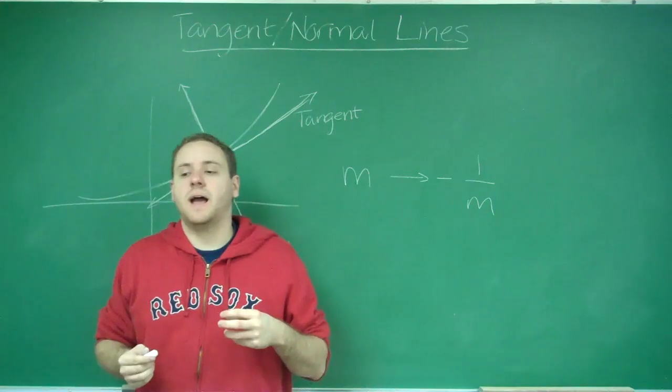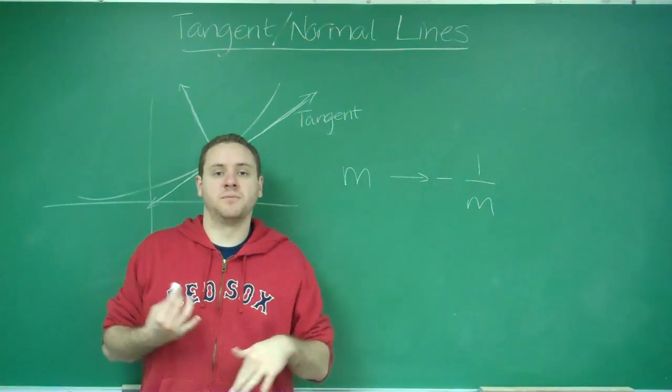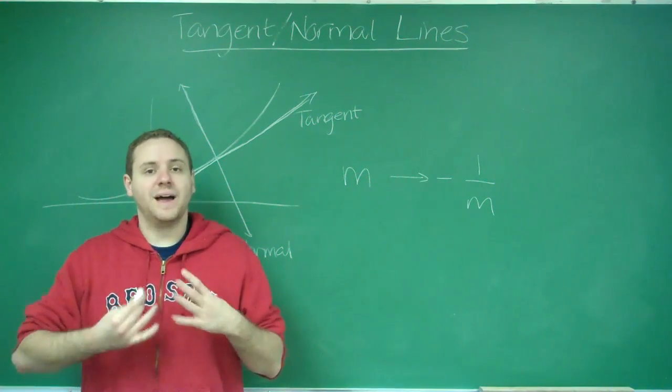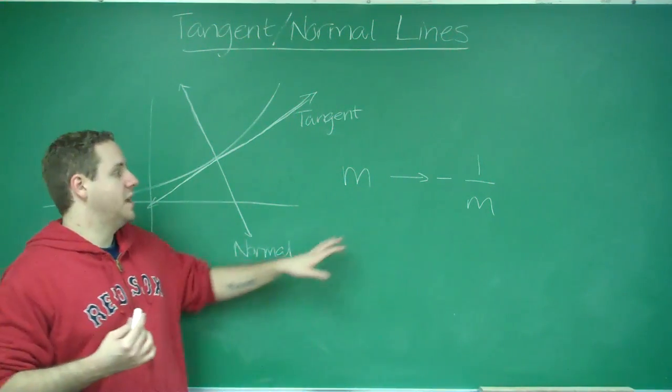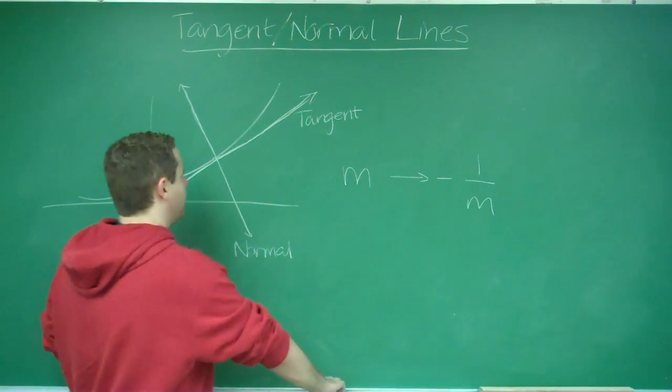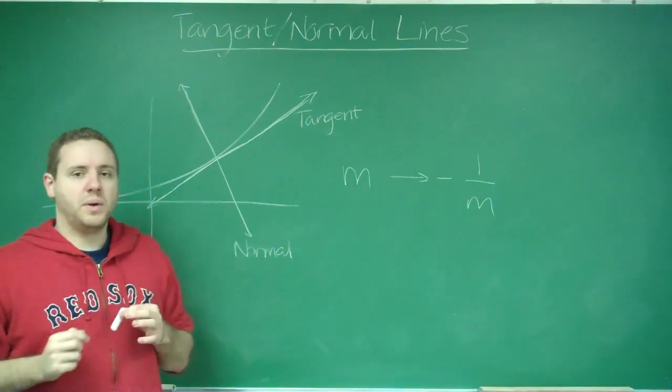Many questions are going to ask you to find the equation of the normal line to a graph. First, you need to take the derivative and find out that slope. That slope is going to be the slope of the tangent line. Then you do this to find the slope of the normal line. Now, to find the equation of a line, not only do you need a slope, but you need a point.